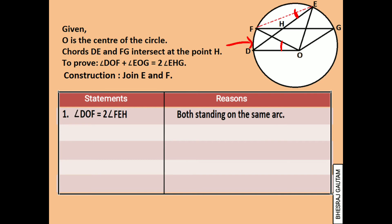Similar to statement 1, we can say that central angle EOG is equal to double the inscribed angle EFH, as both are standing on the same arc EG. Here angle EFH is the same as angle EFG.